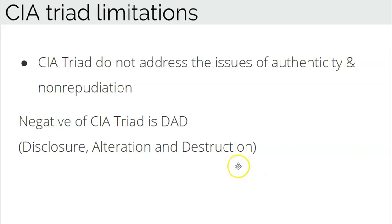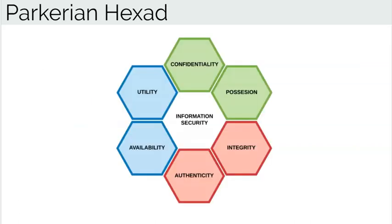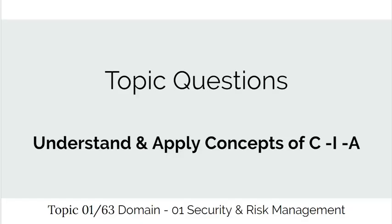The exam does not expect you to know NIST Special Publication 800-33 in detail, but it wants you to understand security objectives. The Parkerian Hexad covers six security objectives — three same as in the CIA Triad, plus authenticity, utility, and possession. Authenticity here means the quality of being real or true; utility means how useful the information is; and possession or control means the physical state where information is maintained.